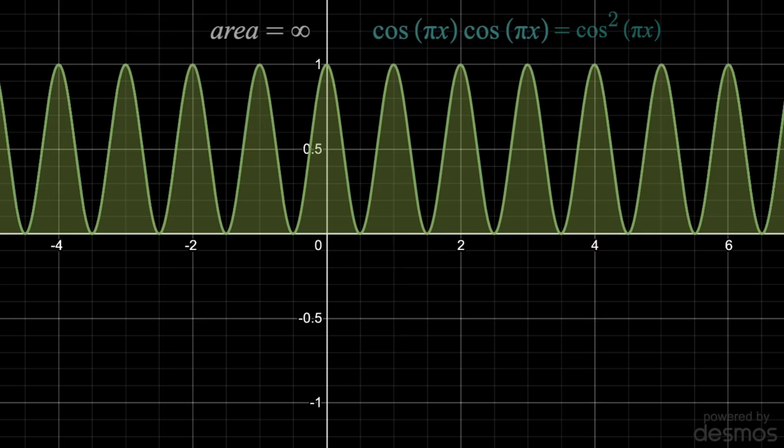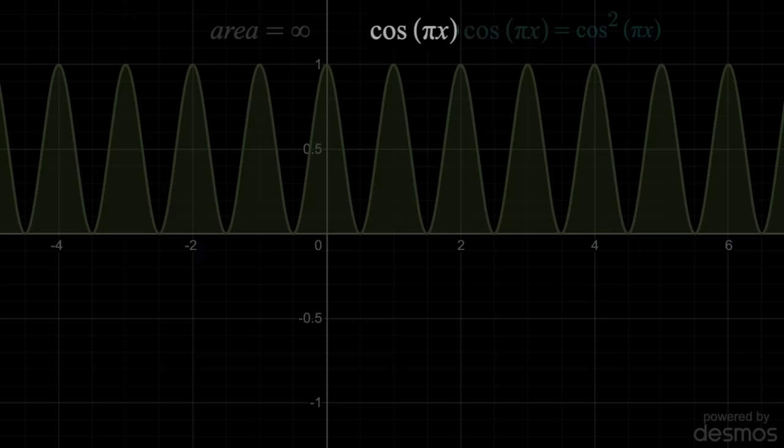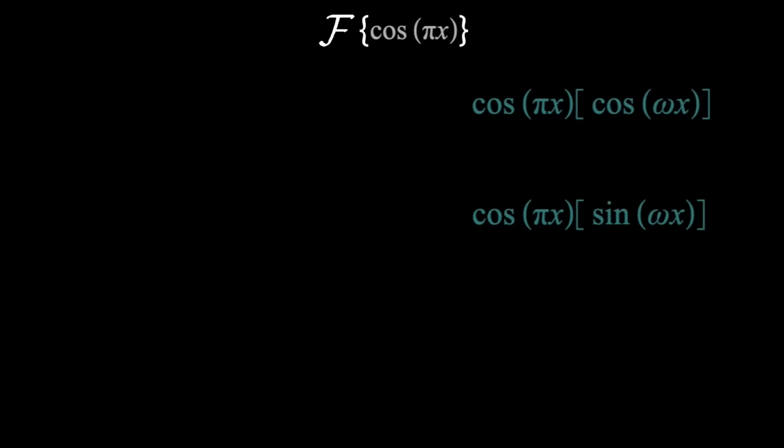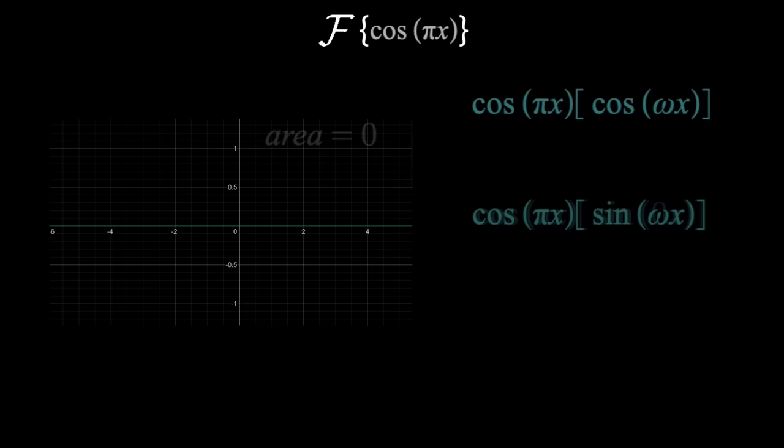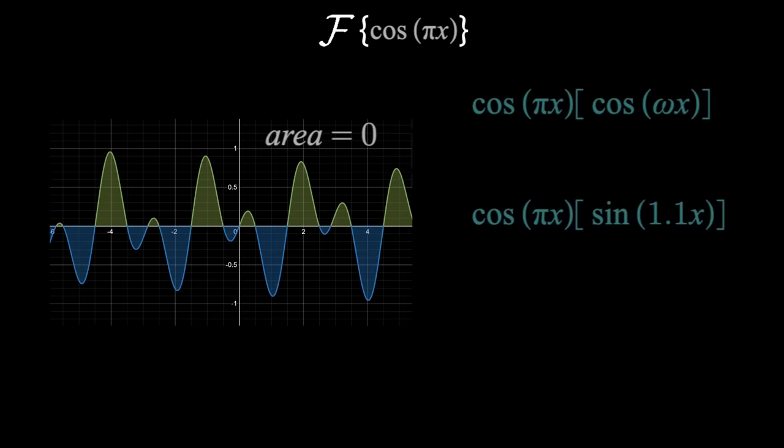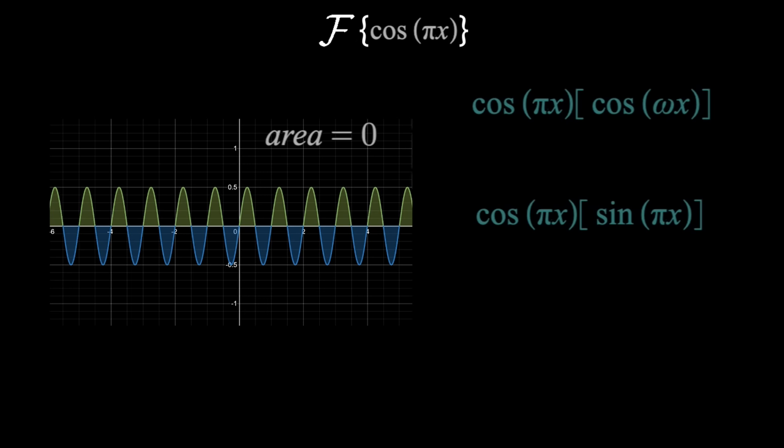Now if you were asked to find the Fourier transform of, let's say cosine of pi x, from before you know you're going to multiply that by cosine of omega x and sine of omega x and track the areas of each of those. The second one though will always have zero area. As I increase omega you'll see that the green and blue areas are always equal and thus cancel, which happens because the curve is always symmetric about the origin. Even when the coefficients are the same, we still see that symmetry and zero area. So I'm going to completely ignore this plot.